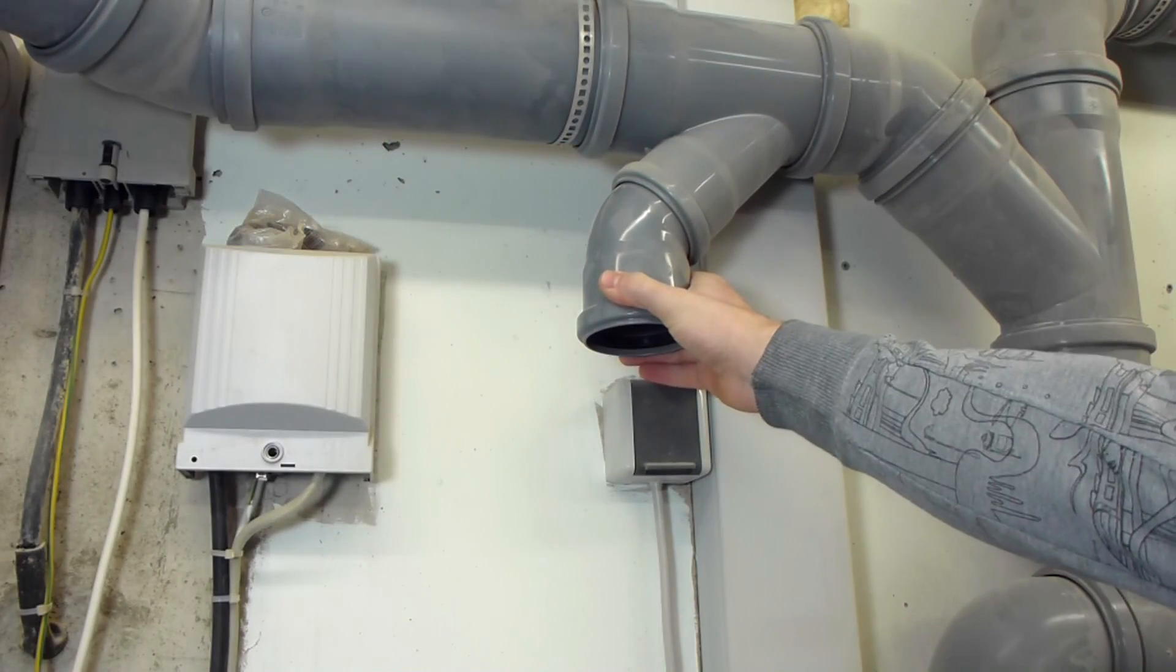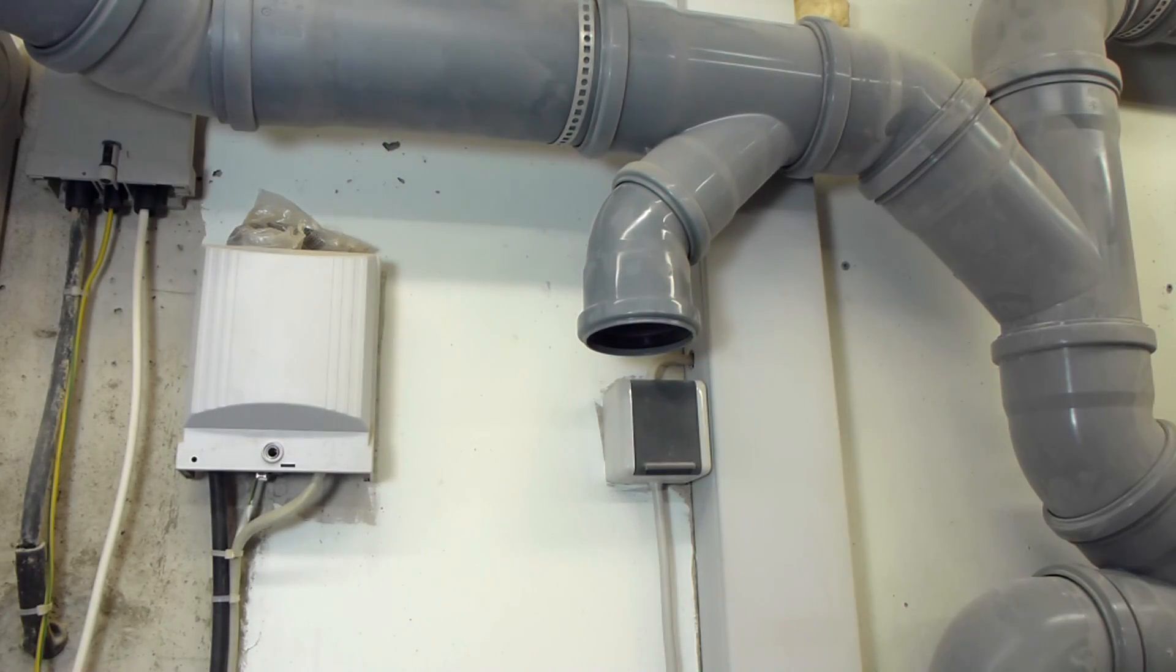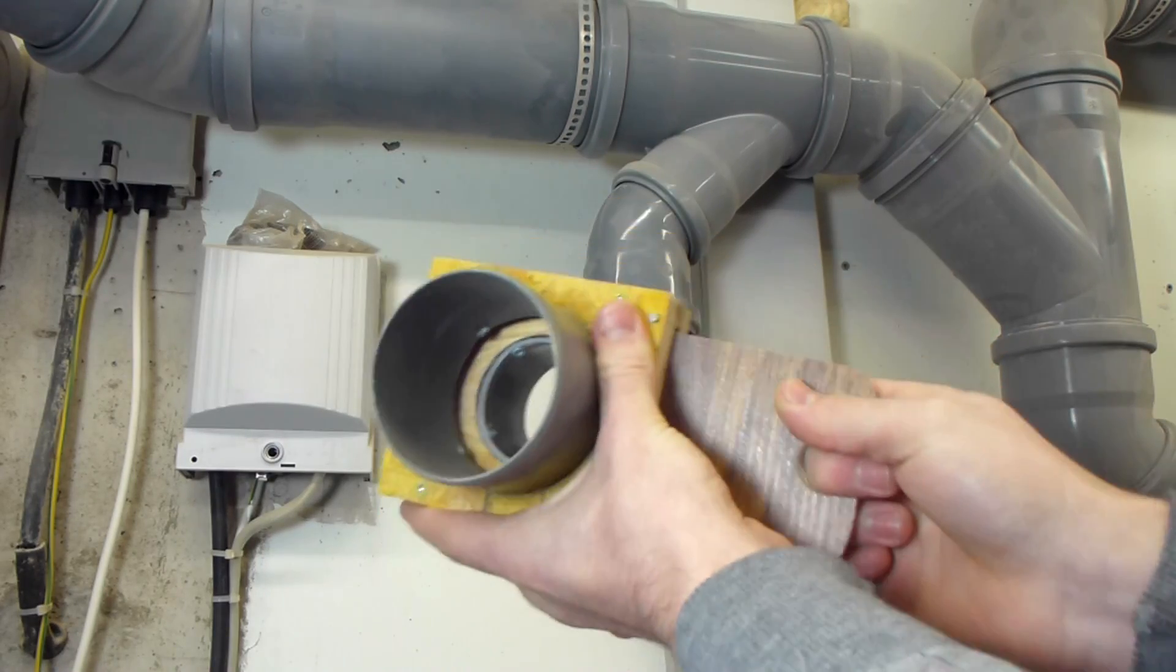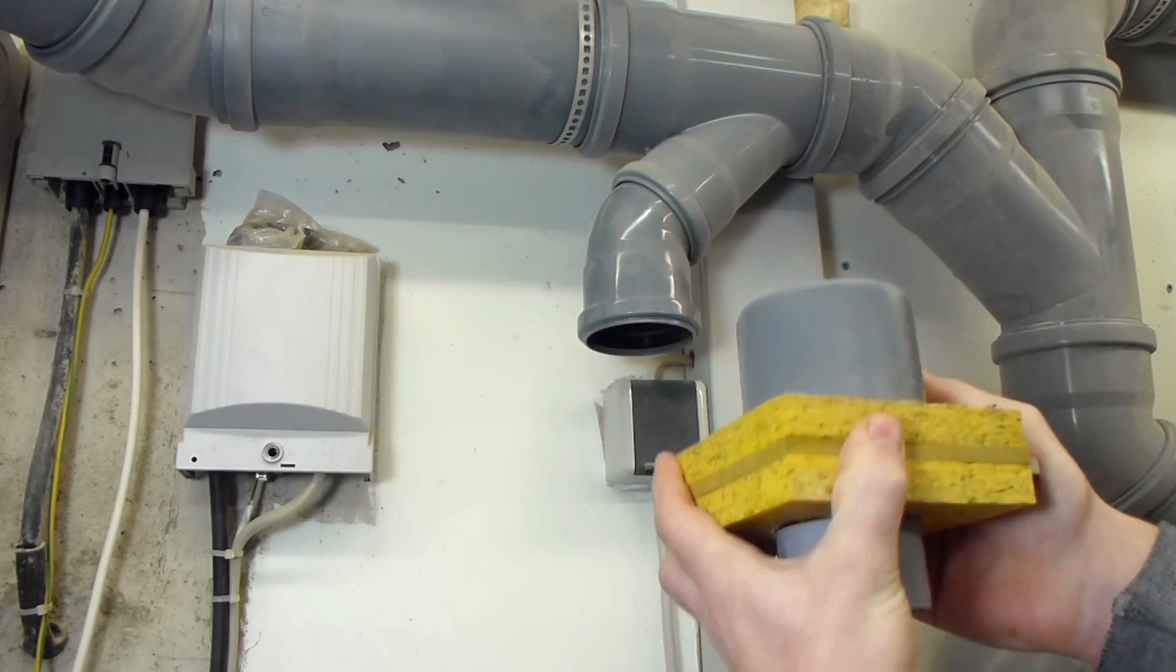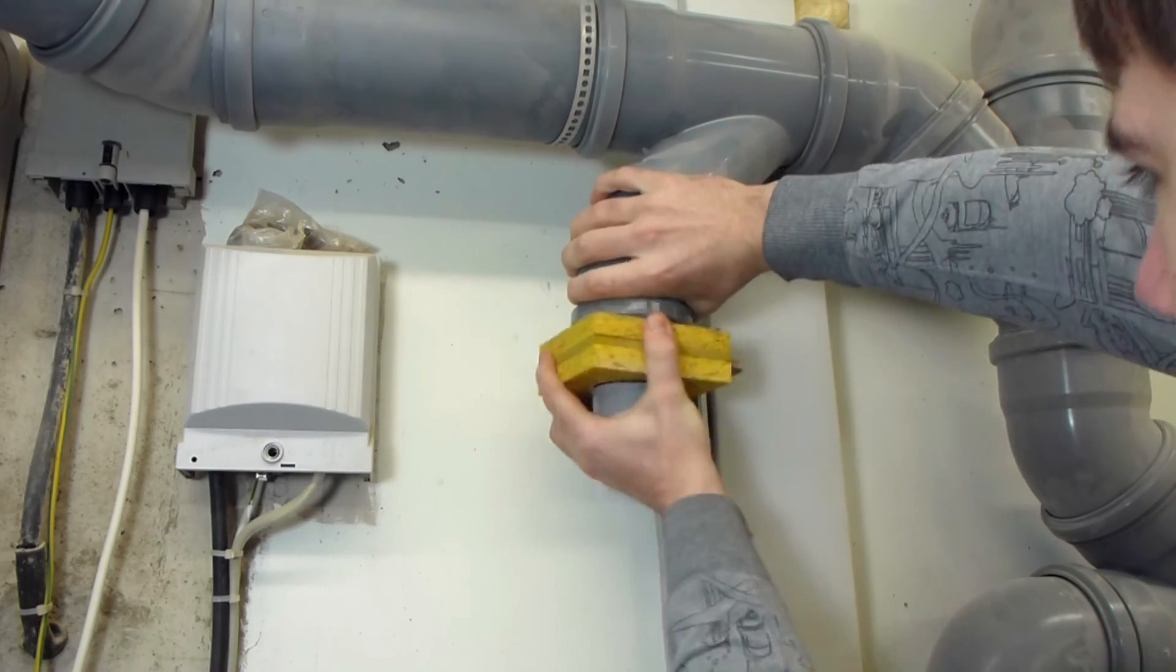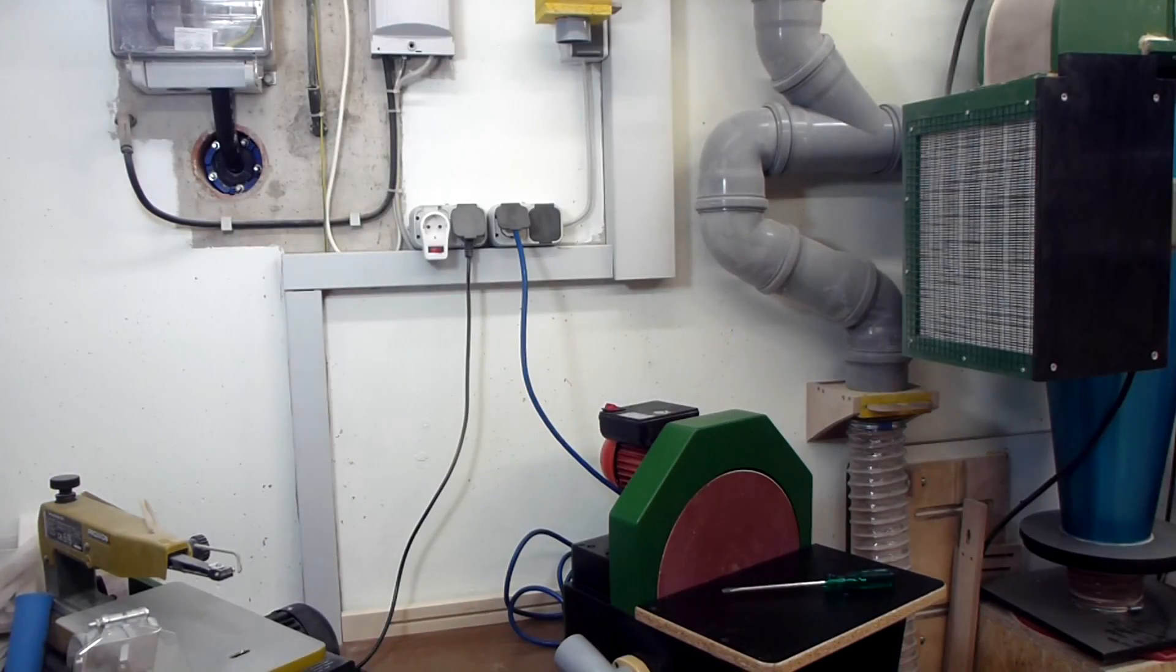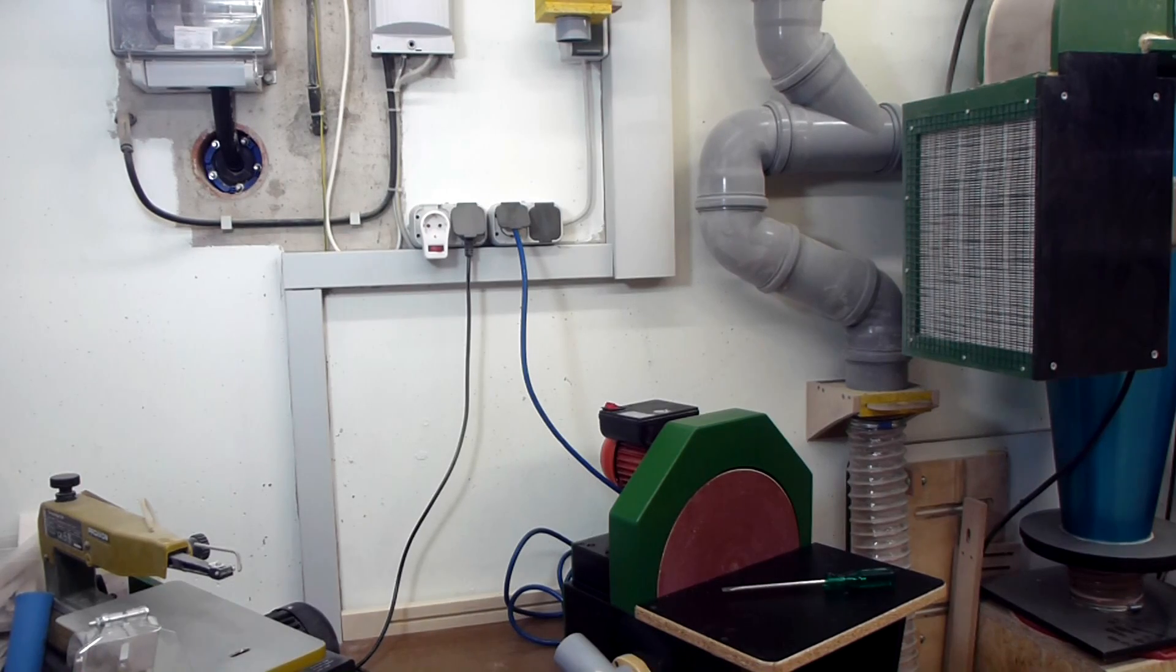And here I have an outlet from my pipe system. And I can finally put on another one of my homemade blast gates. And now I just need to cut the hose to the right length and connect the two pieces.